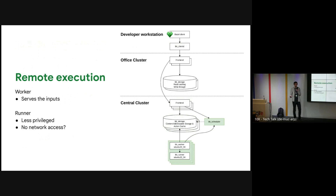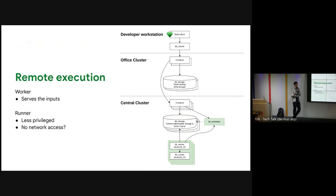Then we have remote execution. Let's add a scheduler, worker, and runner process. The runner process is less privileged — it might not even have network access, which is good for some actions. The worker is responsible for populating the disk with all the input files. There's a single scheduler, and it is able to cope with very large clusters even as a single process.